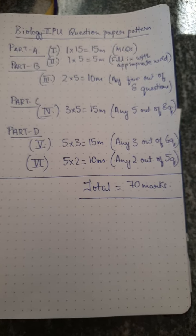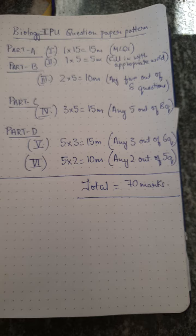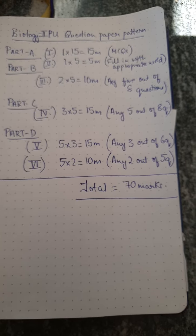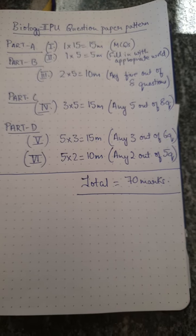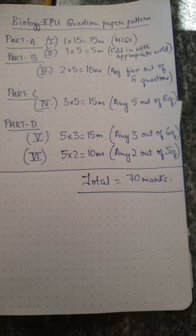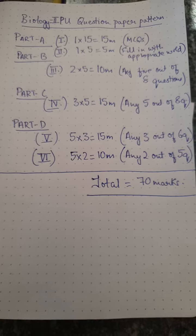Then the sixth Roman numeral: five-mark questions, answer any two out of five questions. This is 10 marks. So the total is 70 marks.